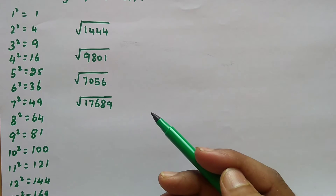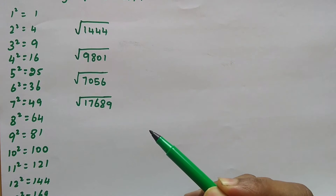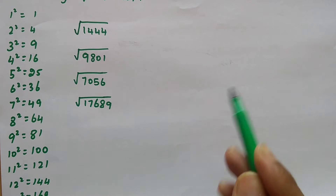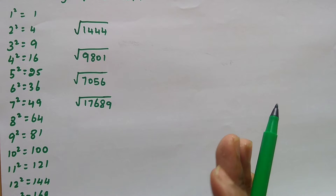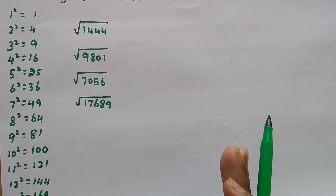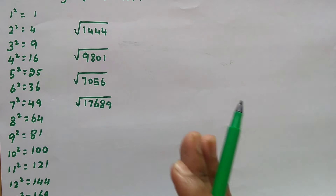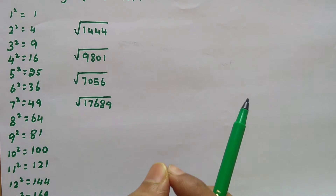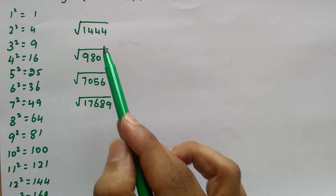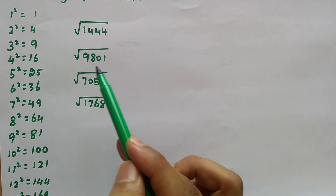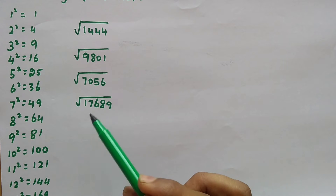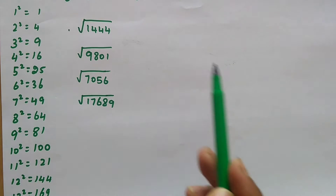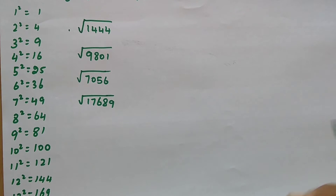Here I have given 4 examples. Before solving these 4 examples using a short trick, let me show you how to solve the square root problem using the traditional method. Square means you are multiplying the same number 2 times. Example: 12 x 12 gives you 144, so the square root of 144 is 12. The 4 examples are: square root of 144, square root of 9801, square root of 7056, and square root of 17689. Let me first show you the traditional method and then the short trick.